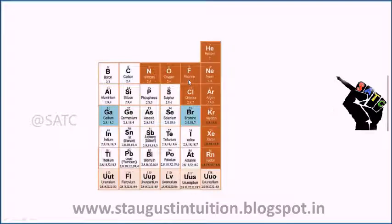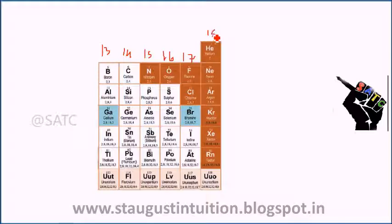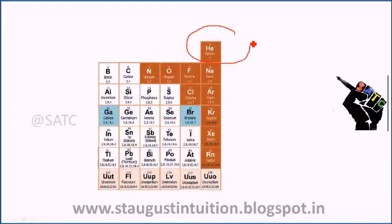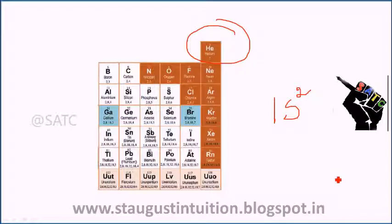Properties of P-Block Elements. P-Block Elements in the periodic table include Group 13, Group 14, Group 15, Group 16, Group 17, and Group 18. These are P-Block Elements. There is an exceptional case of Helium — Helium is a P-Block Element, and it is an exceptional case.